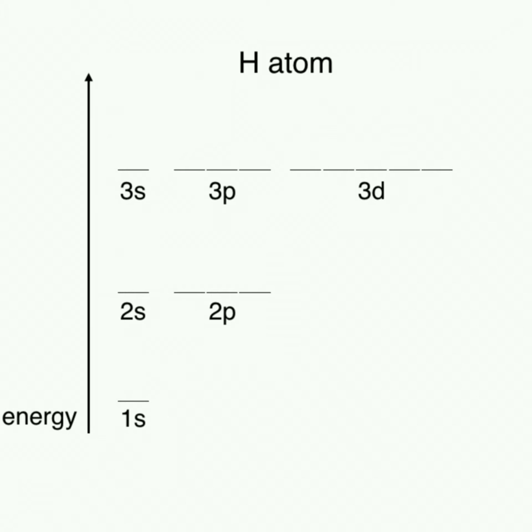Let's take a look at the energy level diagram for hydrogen. We can see that all orbitals with the same n, for example, all 3s, 3p, and 3d orbitals are in line with each other.